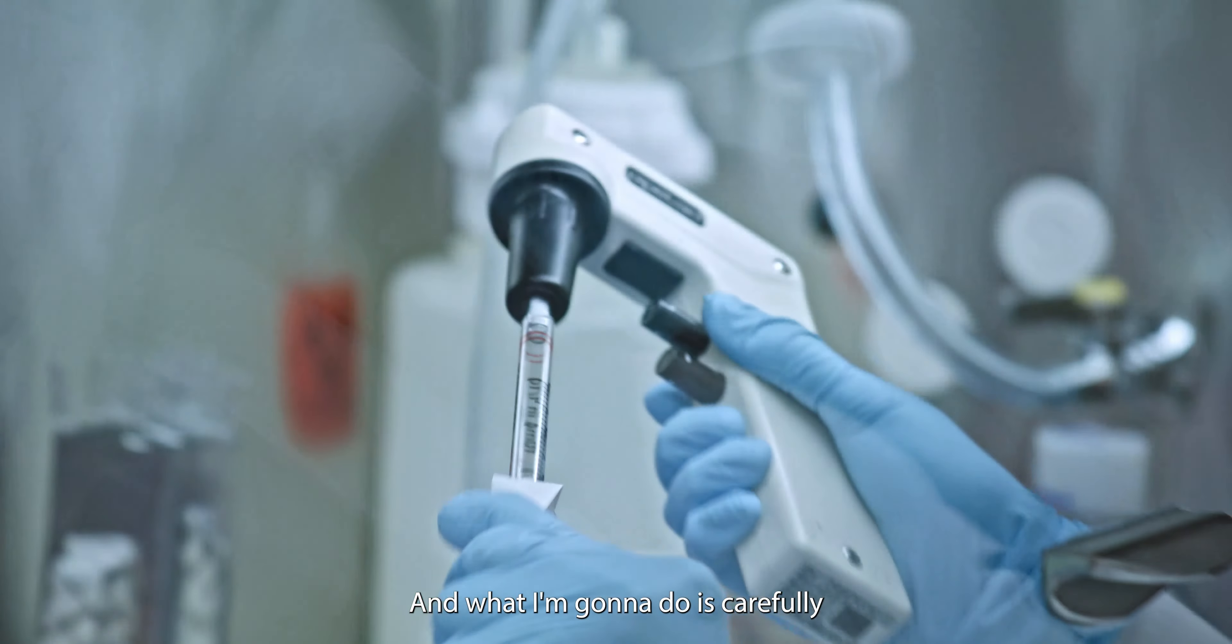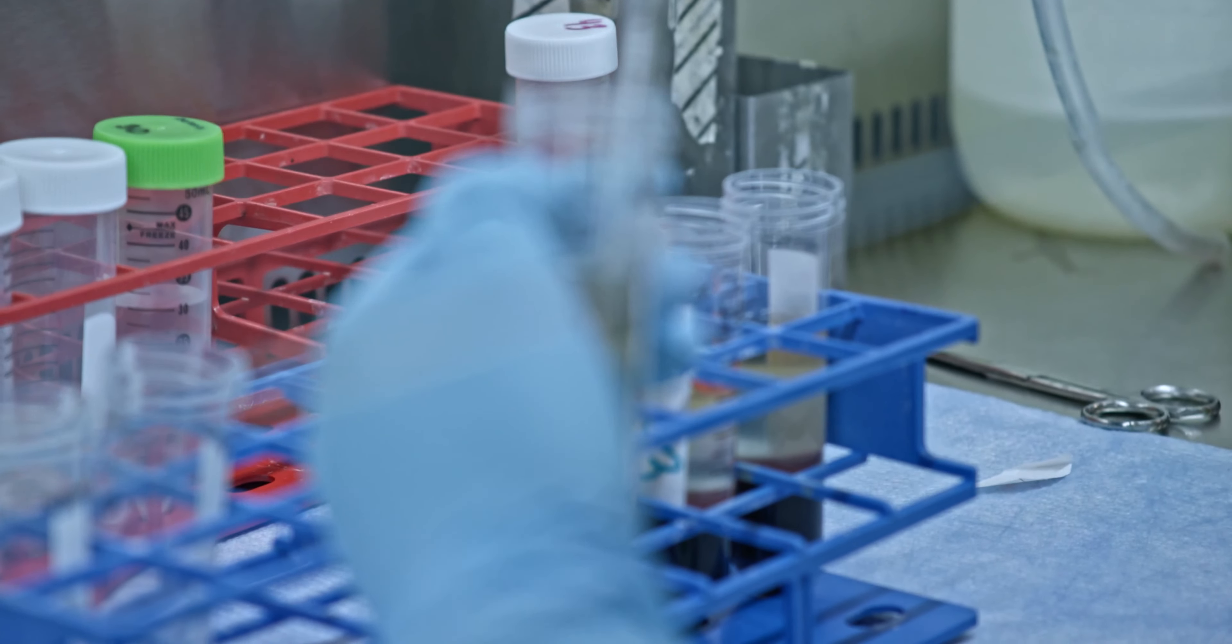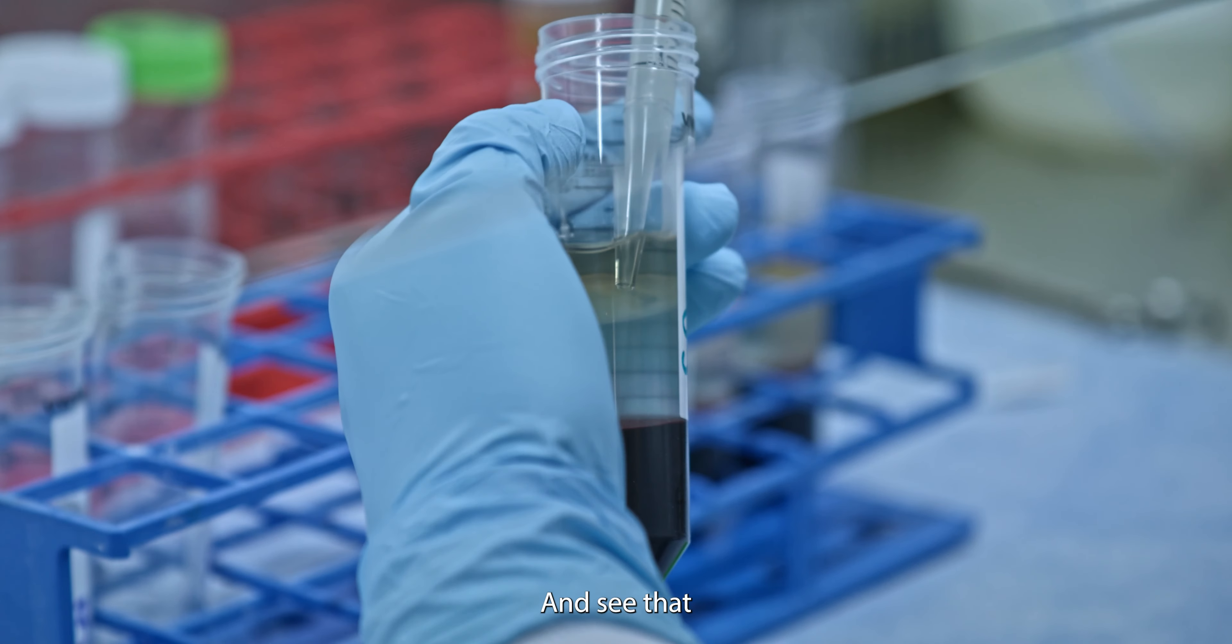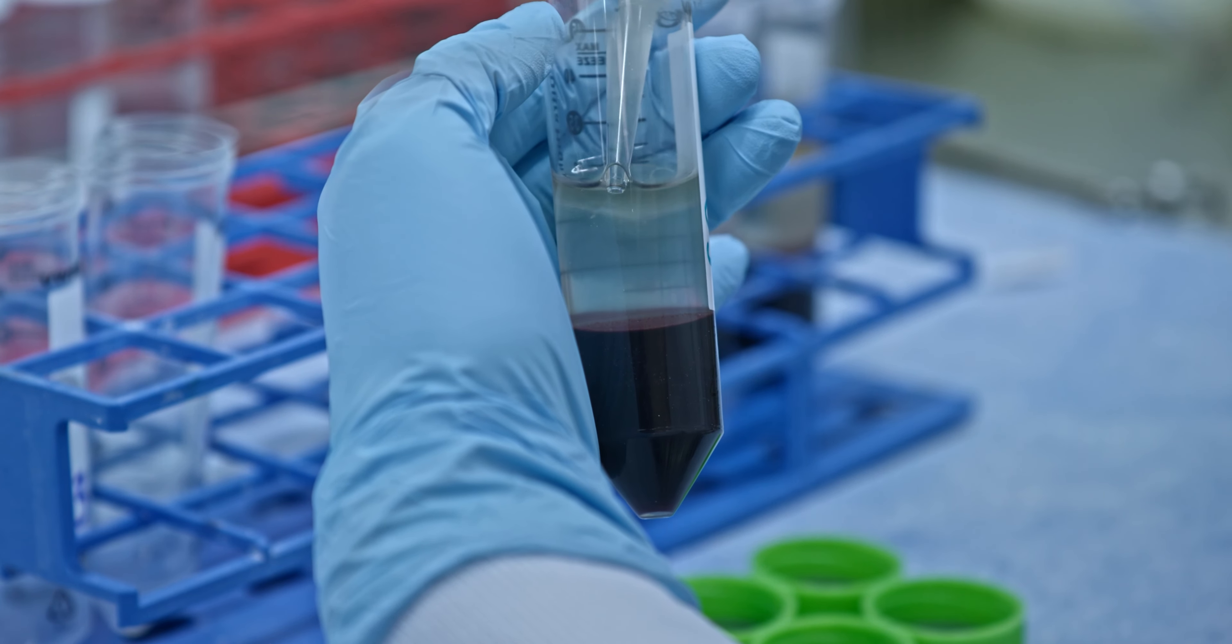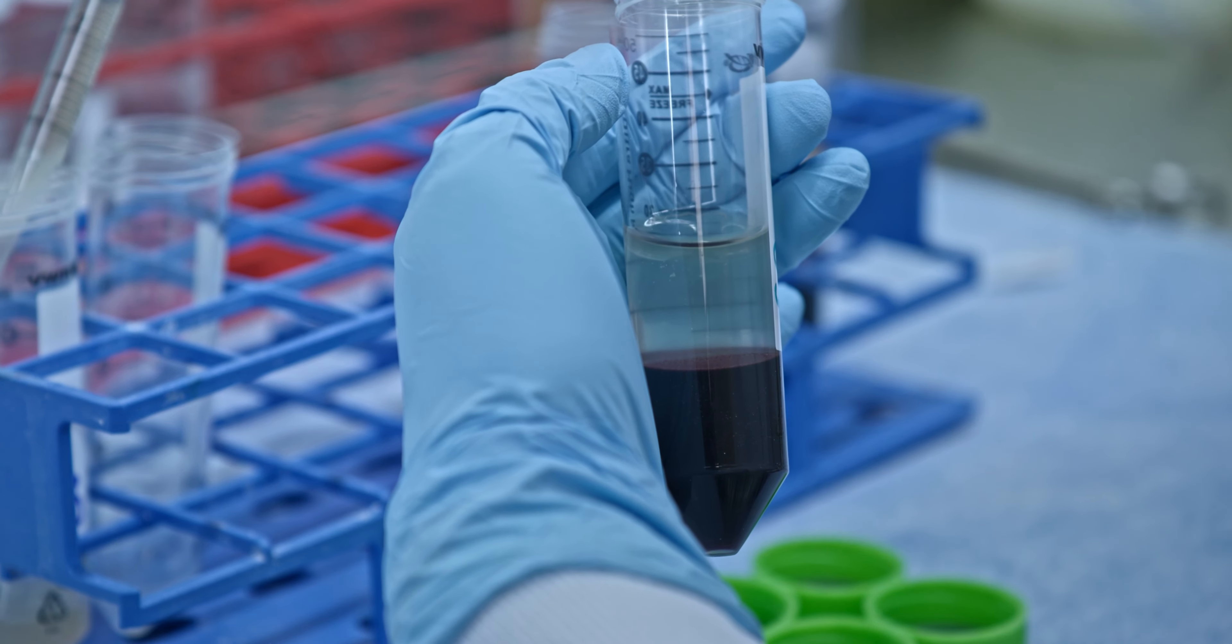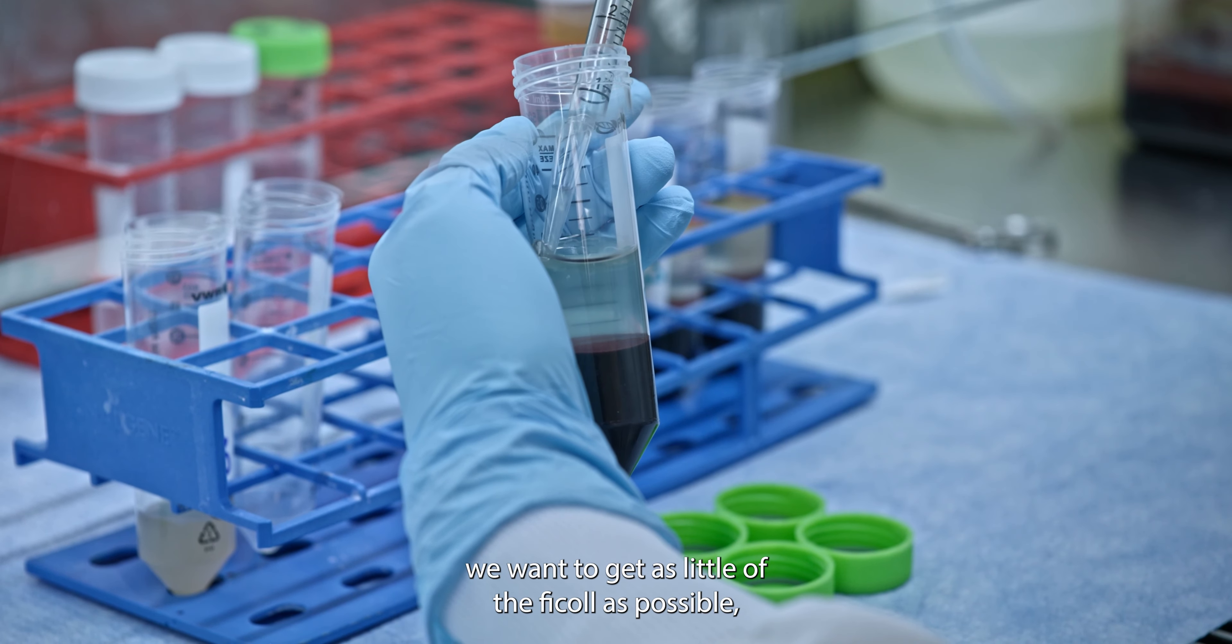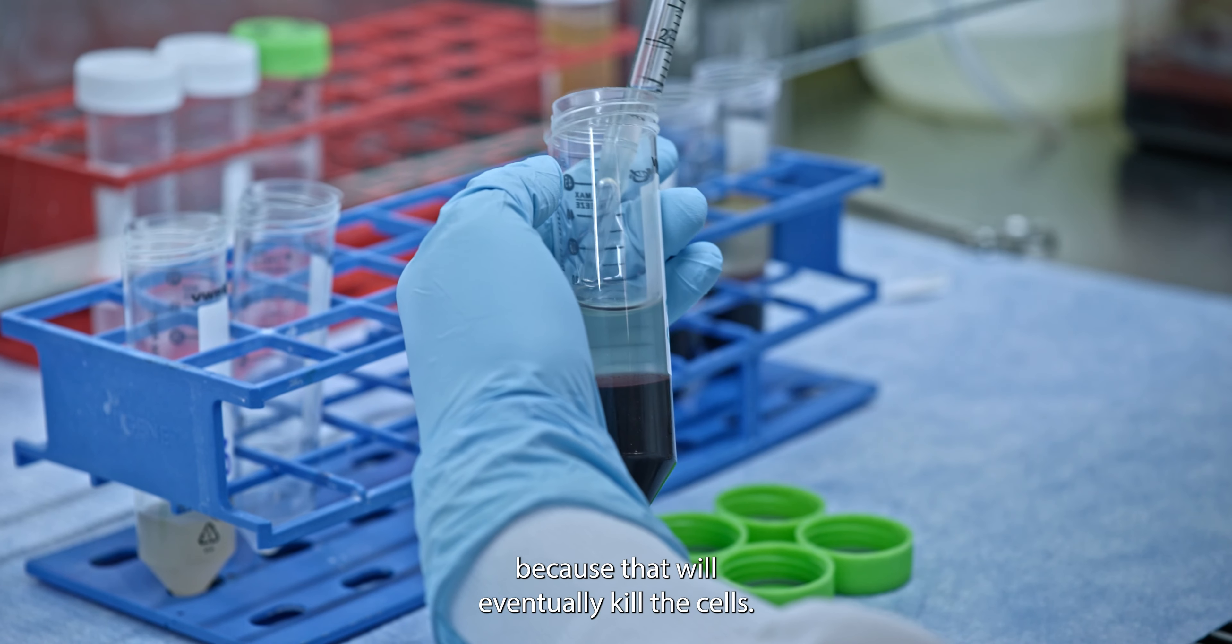And what I'm going to do is carefully take out the layer of white blood cells and put that into a new tube. When we do this step, we want to get as little of the Ficoll as possible because that will eventually kill the cells.